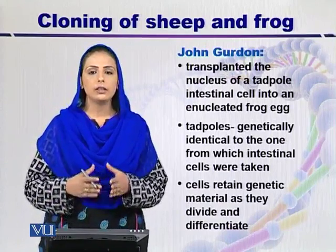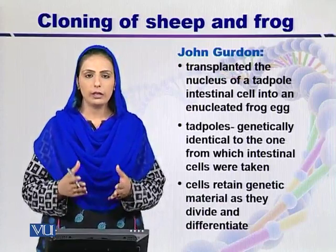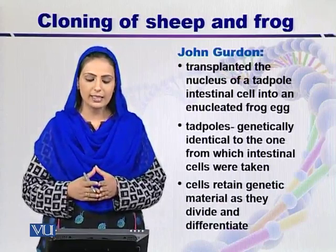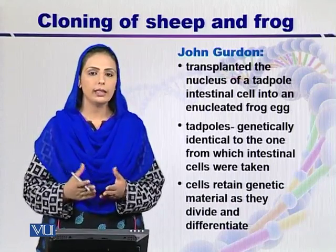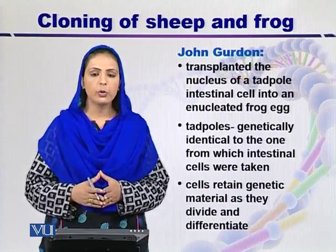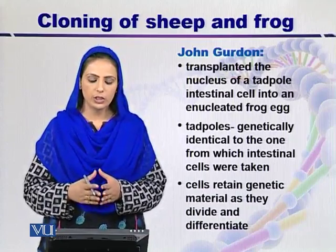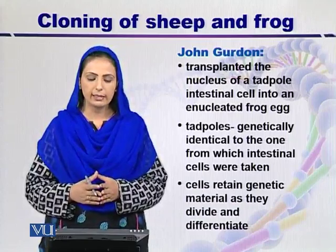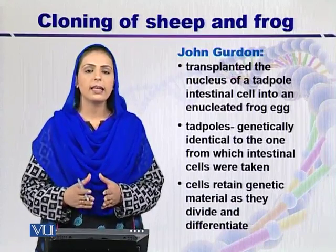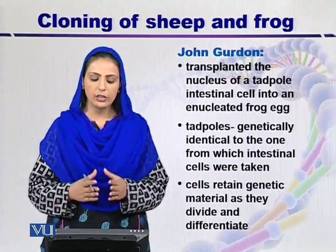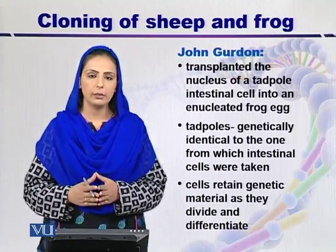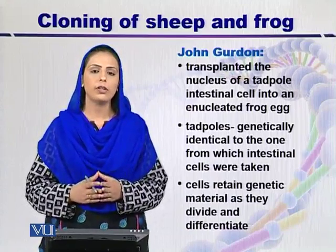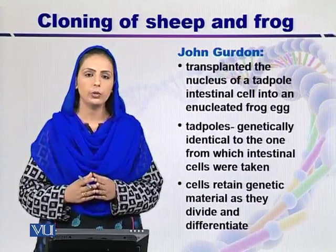John Gurdon used a somewhat different technique. He transplanted the nucleus of a tadpole intestinal cell into an enucleated frog egg and produced a number of tadpoles which are genetically identical to the one from which the intestinal cell was taken. From this, they found that cells actually retain their genetic material and genetic information as they divide, proliferate, and differentiate into the organism.